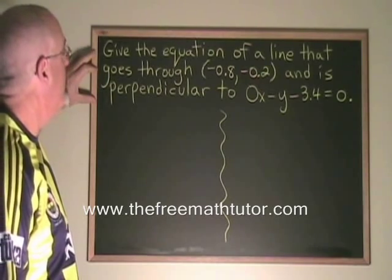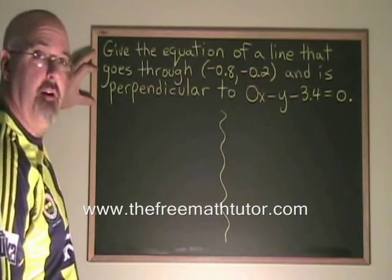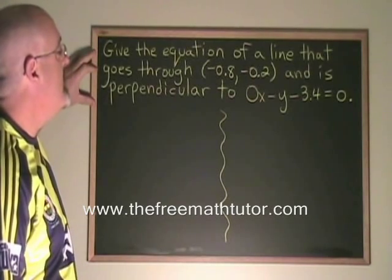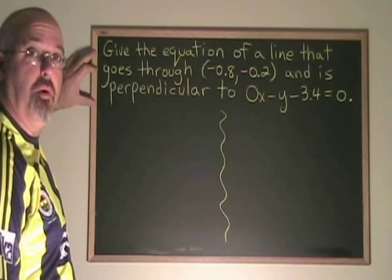In this example, we are being asked to give the equation of the line that goes through the point negative 0.8, negative 0.2 and is perpendicular to 0x minus y minus 3.4 equals 0.